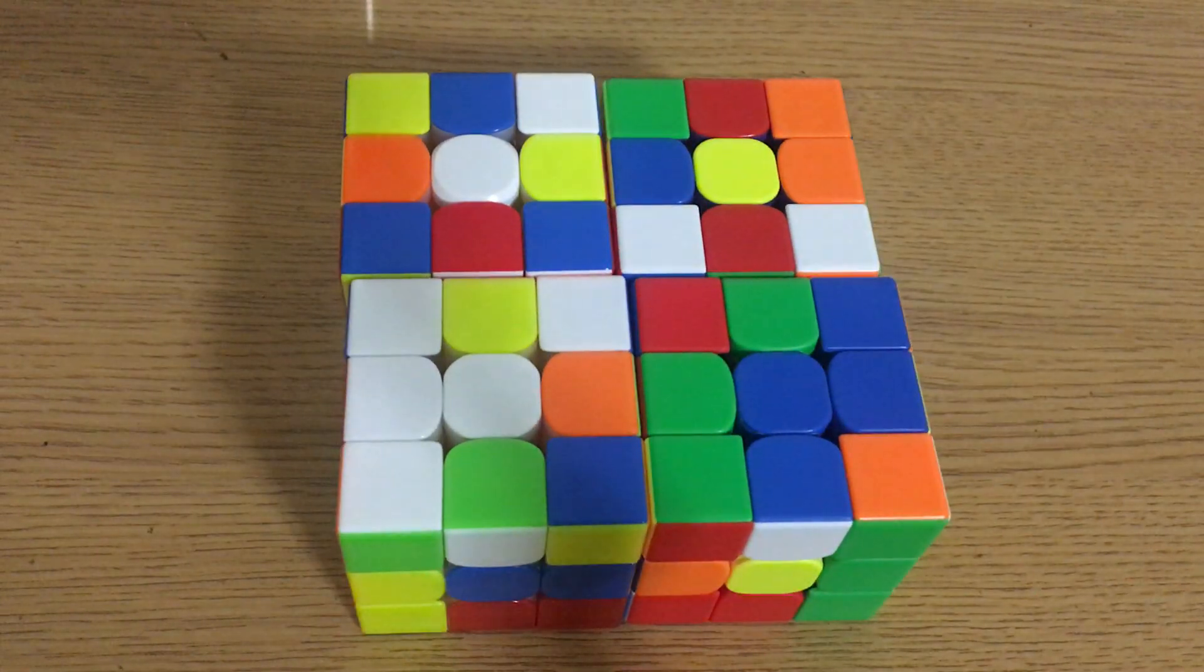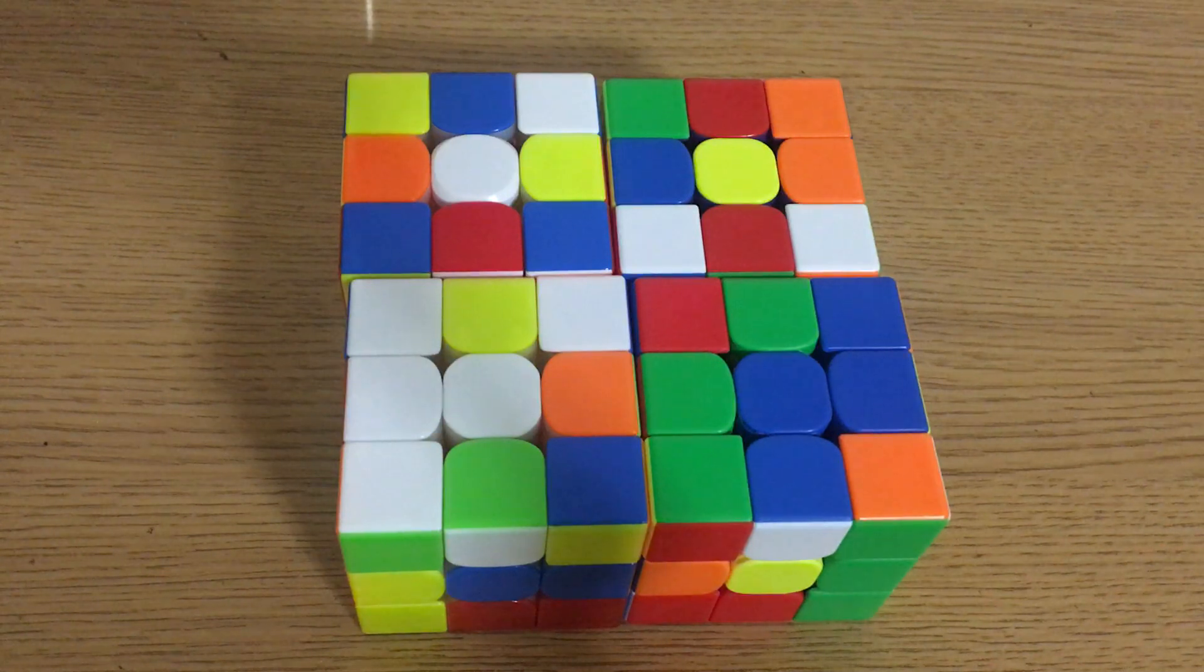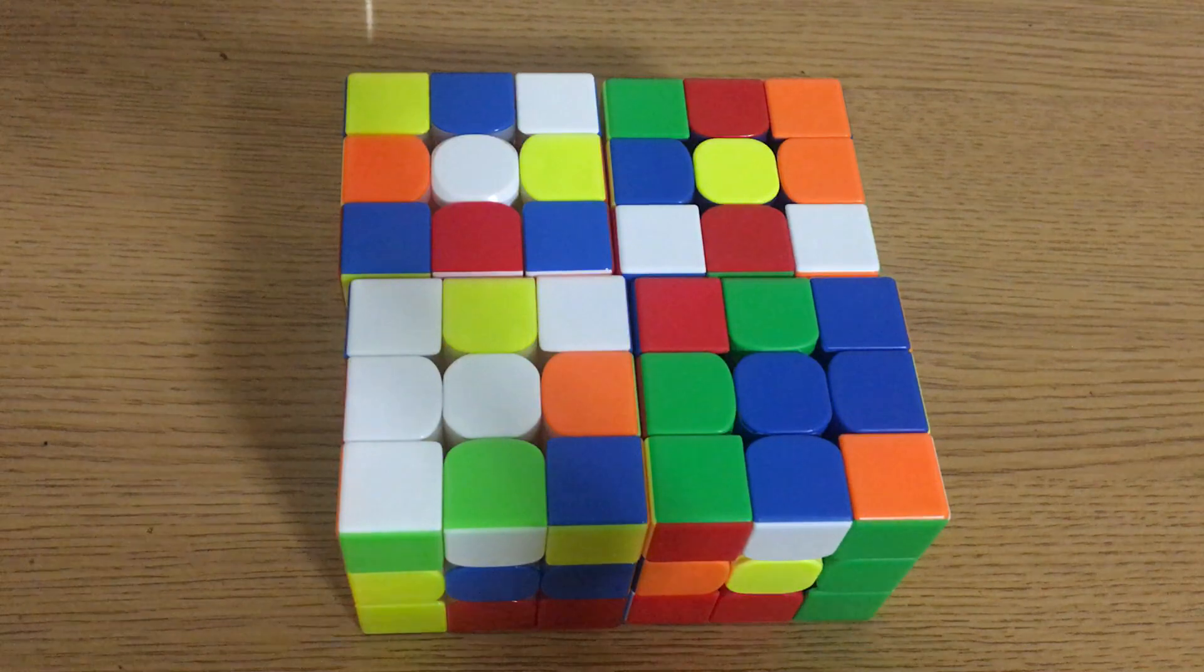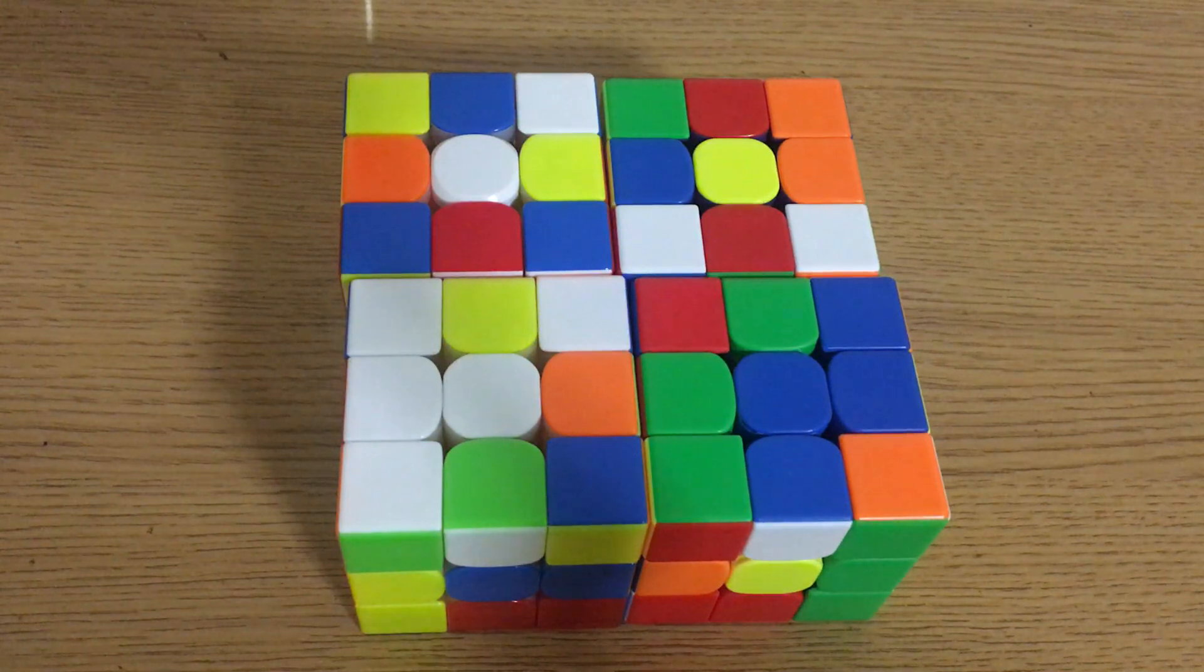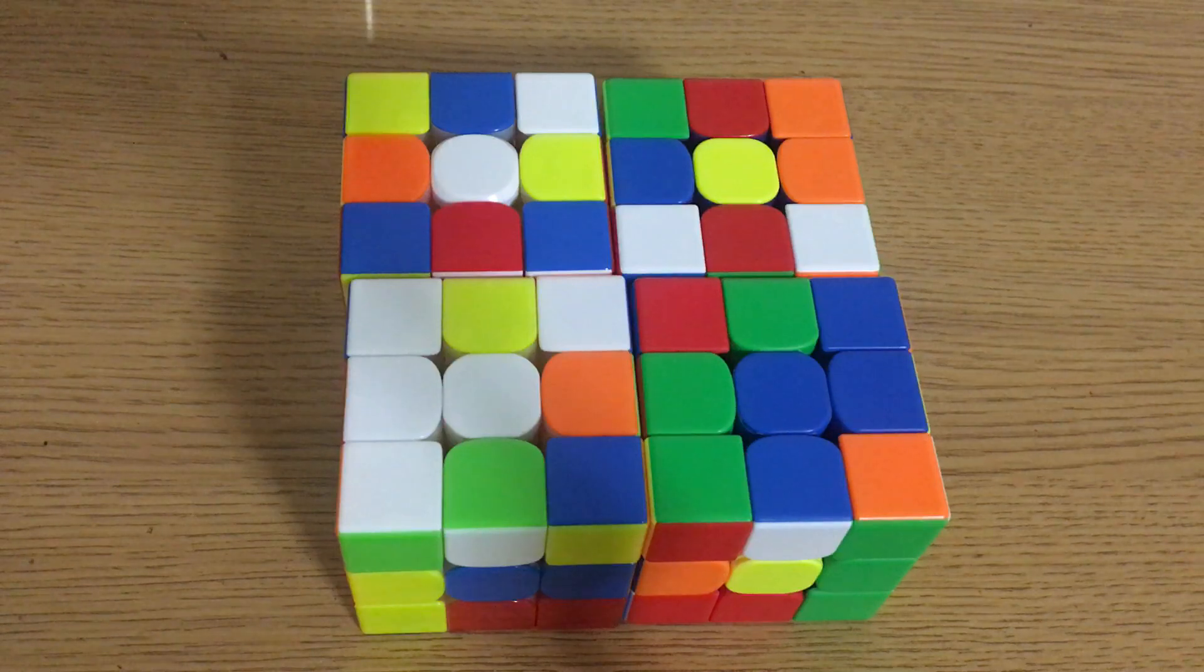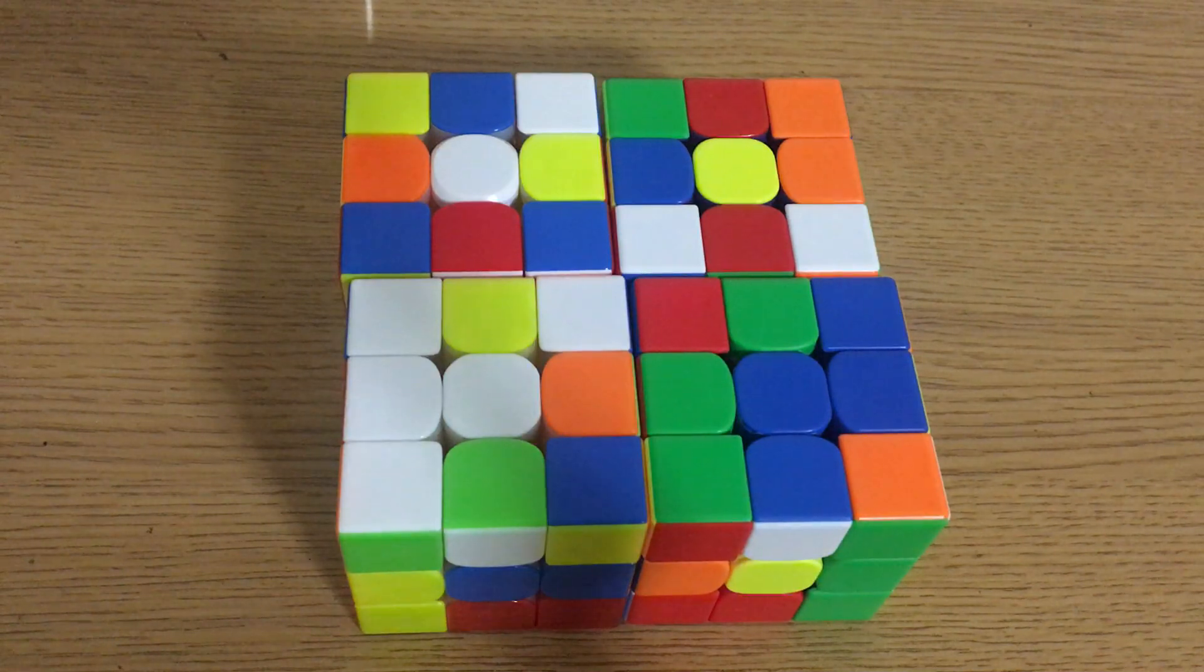Matty Hirota and Naba just threw down an insane 4.39 unofficial average, and I think this is really impressive to say the least, because not only is it much faster compared to the world record average right now, but it also counts a 3.71.